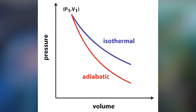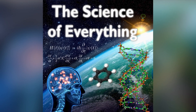This all comes from the ideal gas law PV = nRT. Adiabatic cooling and warming will come into play later when I get around to doing an episode on weather and climate science.